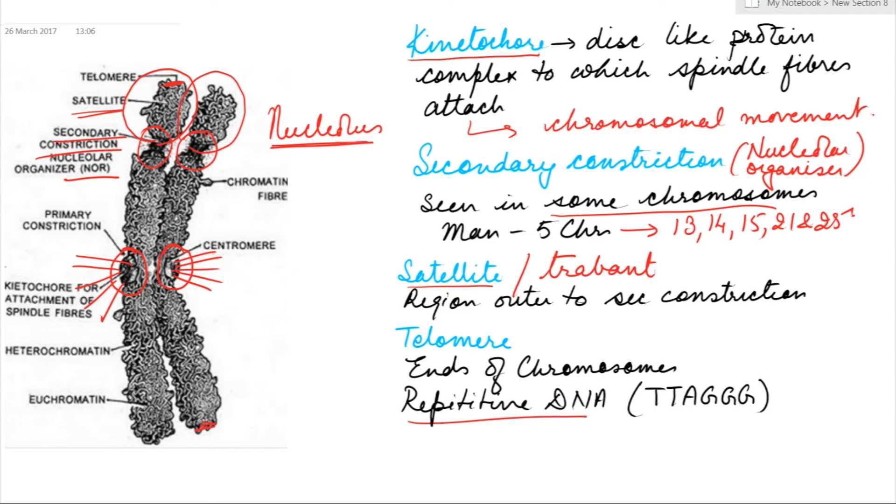The sequence is TTAGGG. They help the chromosome to maintain their identity. So this is the structure of a chromosome.